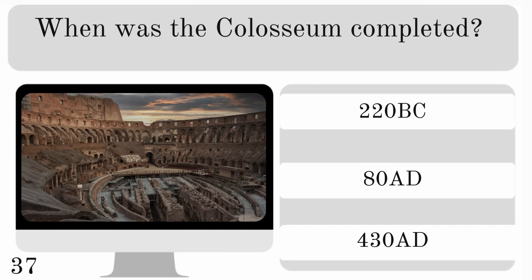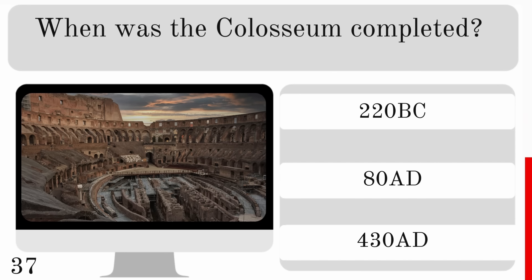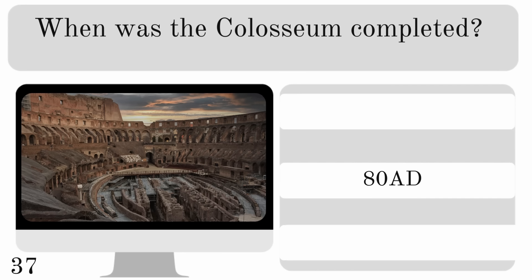When was the Colosseum completed? 220 BC, 80 AD or 430 AD? And the correct answer — 80 AD.